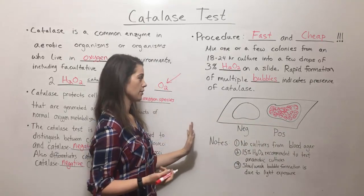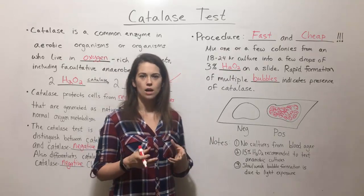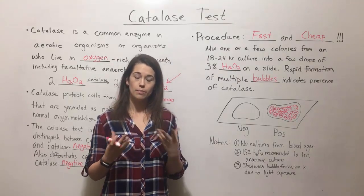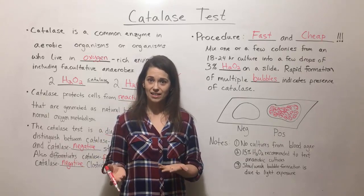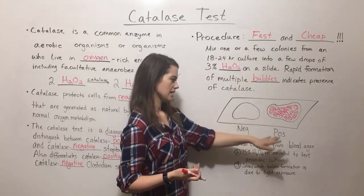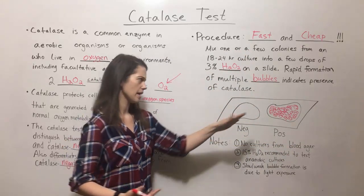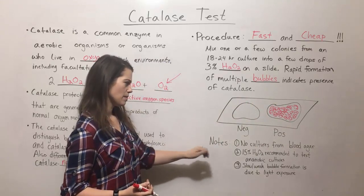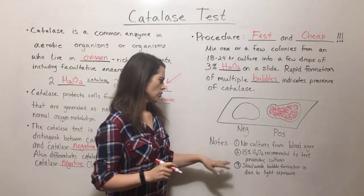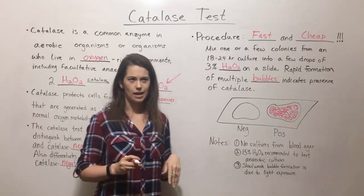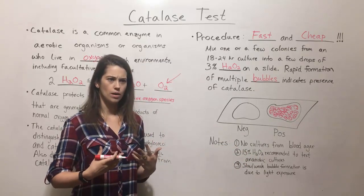There are a couple of things to keep in mind if you're doing a catalase test. One is that you can't use cultures that have been grown on blood agar, because blood agar is a bacterial growth medium that contains red blood cells, and red blood cells themselves have catalase. So when you collect colonies from blood agar, you'll also be collecting red blood cells, which can give you a false positive. Another thing to keep in mind is that if you're testing anaerobic cultures, you might use 15% hydrogen peroxide, which will help give a stronger, more easily observable reaction.